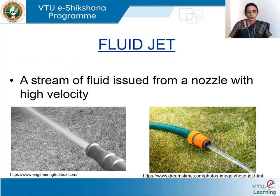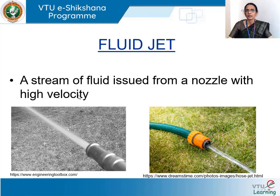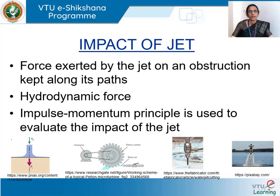Let me start with an introduction to the concept of fluid jet. All of you must know what a fluid jet is — while watering your plants, you might have played with a garden hose which issues water with very high velocity. This is known as a fluid jet, which I can define as a stream of fluid issued from a nozzle with high velocity. Some mass is coming out from the nozzle and it has velocity as well. Because of the mass and the velocity, the fluid jet also possesses kinetic energy. If an obstruction, a vane or a plate, is kept along the path of this jet, the jet exerts a force on the surface, which is known as the impact of the jet.